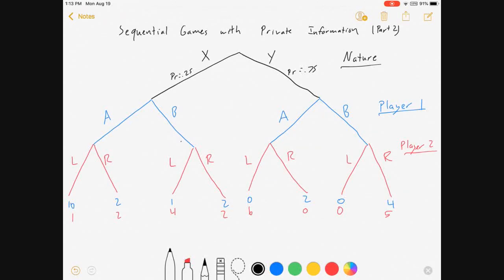Hey everybody and welcome to part two of sequential games with private information. Here's what we're going to do in this game. We've got our sequential game here. Nature's got a 25% chance of going X and a 75% chance of going Y. We're going to assume in this game that player one knows what side of the tree they're on, but player two doesn't.